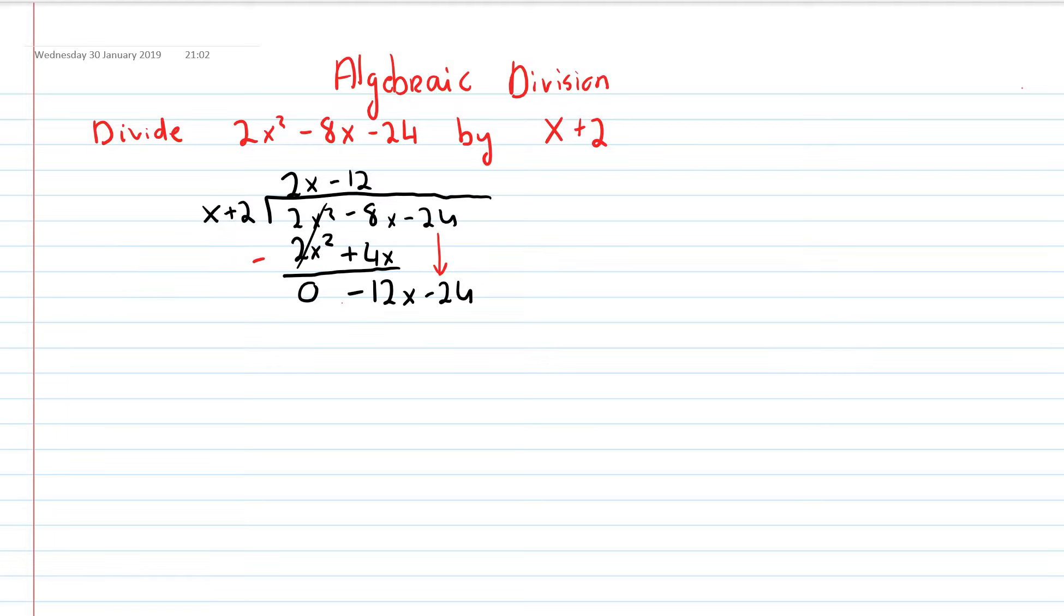And now I do that. So minus 12 by x is minus 12x. And minus 12 by 2 is minus 24.